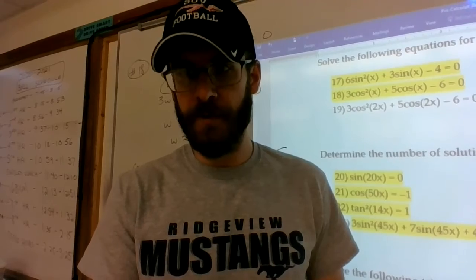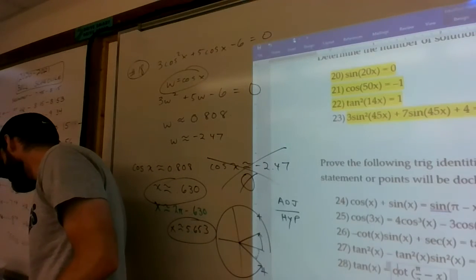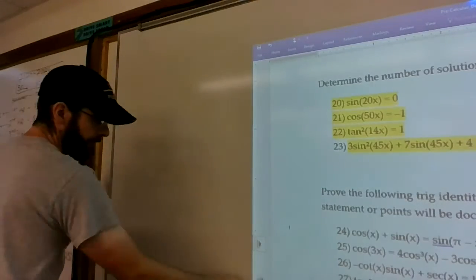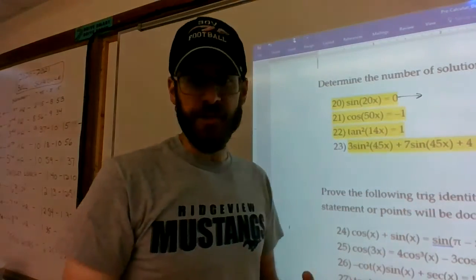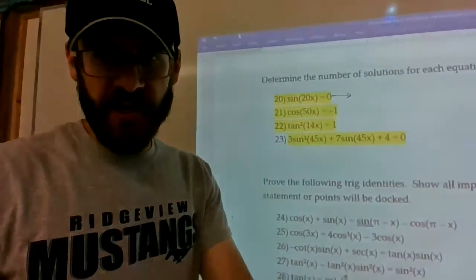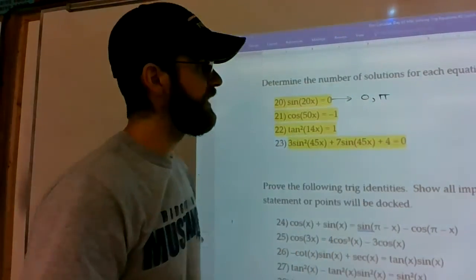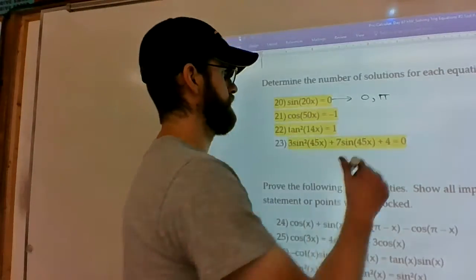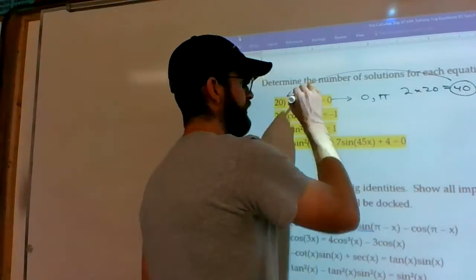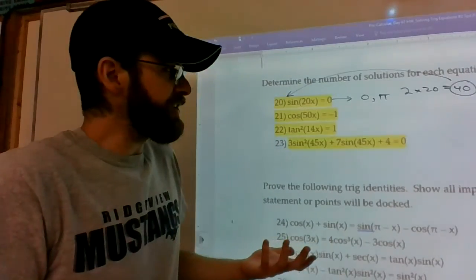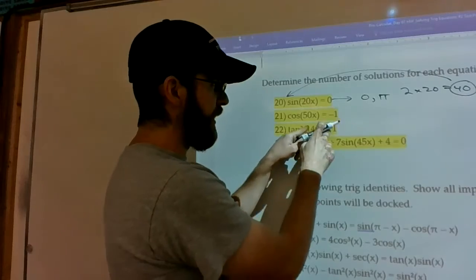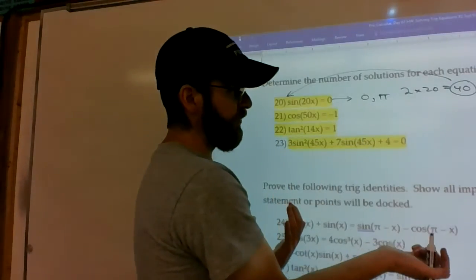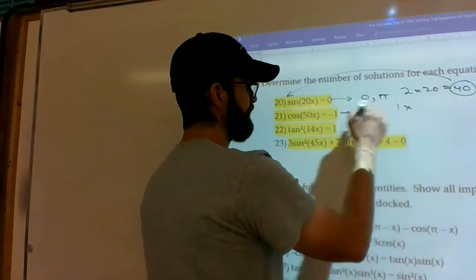Alright do we have enough time for this last group. Alright so just the number of solutions. I just want to make sure everybody is on the same page with this. Your job is to figure out between 0 and 2 pi what's going on. So sine of 20x, where does sine equal 0? It equals it at 0 and pi. There's two solutions between 0 and pi however there's 20 times as many solutions because of the inflation of this angle right here. So there's 40 solutions for number 20. So just make sure you understand how many solutions between 0 and 2 pi a regular x would yield and then multiply by the number inside there. Like cosine of x only equals negative 1 at pi so there's really only one solution but you've got the times 50 here.